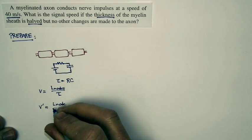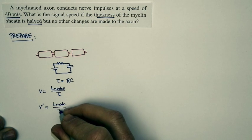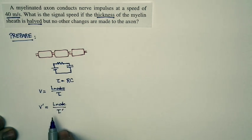So the distance between successive nodes is the same. But one thing that will change is the time constant. So the new speed is just related to the new time constant.